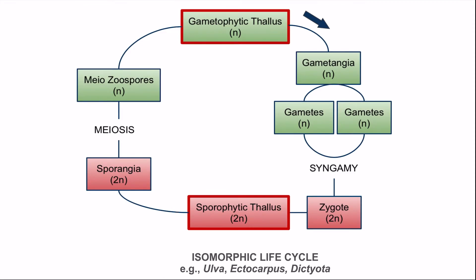The third type of life cycle is the isomorphic life cycle. It is observed in Ulva, which is a green alga belonging to Chlorophyceae, and also in Ectocarpus and Dictyota, which are brown algae.